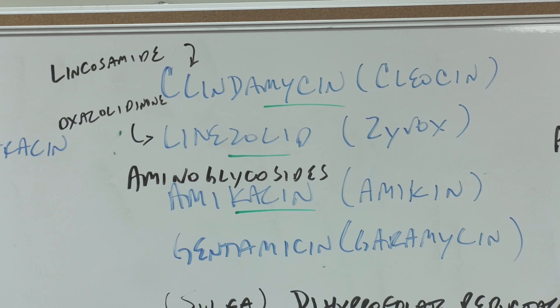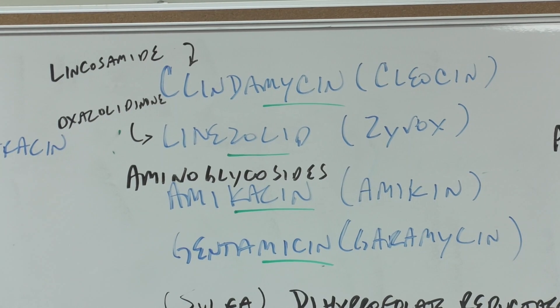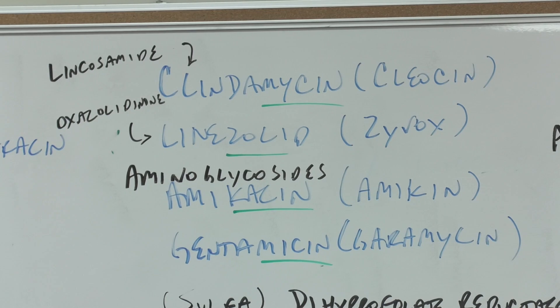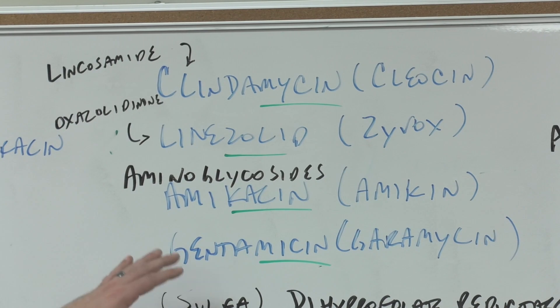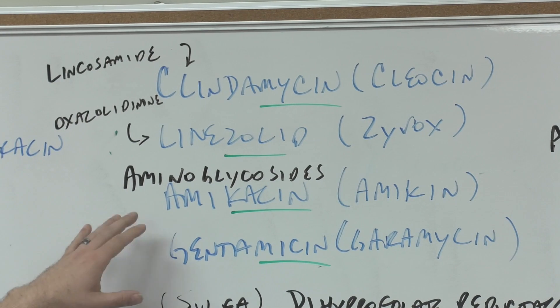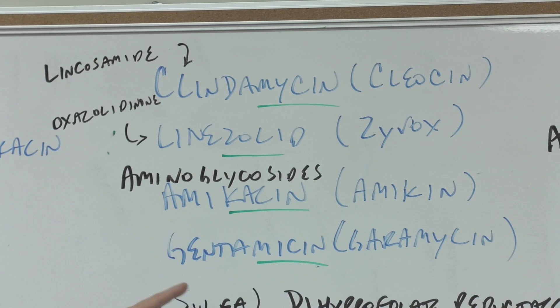Amikacin and gentamicin both have the kasin and mycin stems. The mycin doesn't tell you it's an aminoglycoside, but these two are related in that way—Amikin and Garamycin.